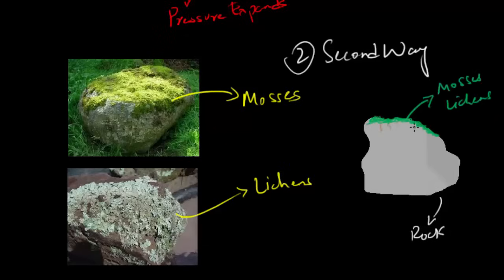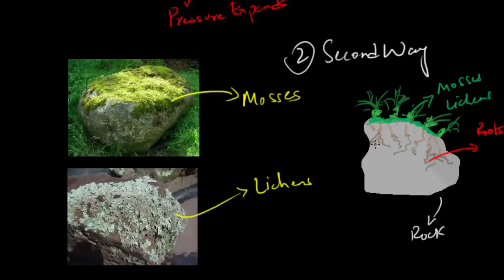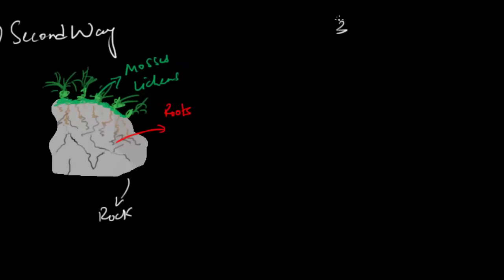And when mosses and lichens grow into grasses and ferns, then later on bushes and trees, this causes rocks to split apart as the roots force their way down through the rocks. The same mechanism as how water splits the rock.